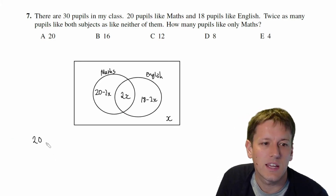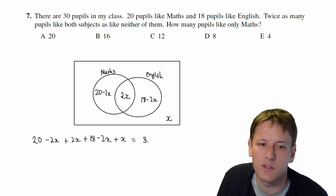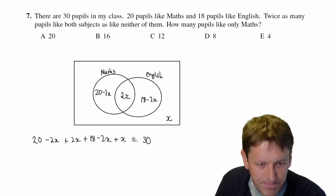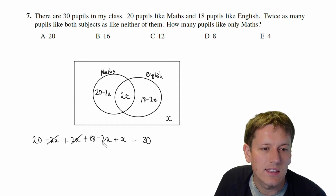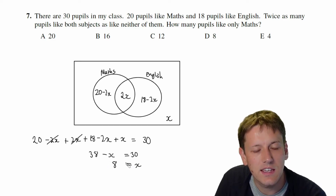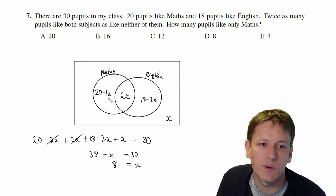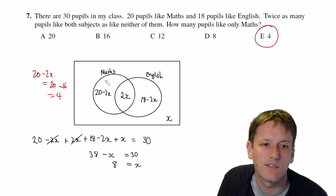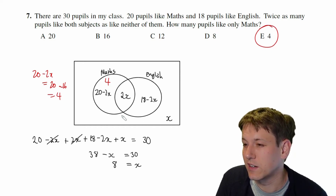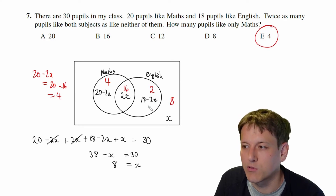We haven't used the fact that there are 30 pupils in total, so adding all sections: (20 minus 2x) plus 2x plus (18 minus 2x) plus x equals 30. Simplifying, 38 minus x equals 30, so x equals 8. The question asks for pupils who only like maths: 20 minus 2 times 8 equals 20 minus 16, which is 4. Checking: 4 plus 16 plus 2 plus 8 equals 30 — correct.